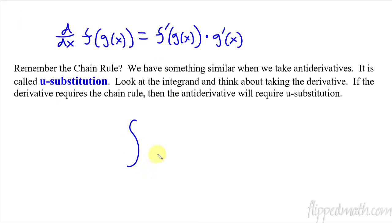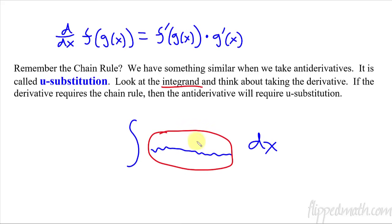When I have an integral, the integrand is the part between the integral sign and the dx. If you study that and think about what it would look like if you took the derivative — if it would require the chain rule to take the derivative, then it's going to require u-substitution to take the integral.